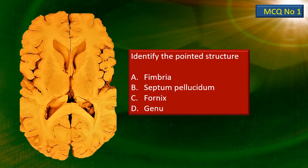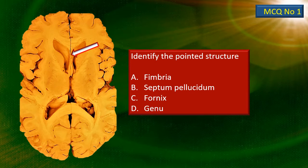Here is a horizontal section of the cerebrum, roughly at the level of the interventricular foramen, and there is a pointed structure with a flashing arrow. Identify that structure. There are four options given to you — choose the correct answer.